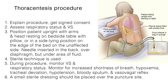The thoracentesis needle is usually inserted in the back, over the diaphragm, but under the area of fluid. Step 4: Sterile technique is used, including gloves, antiseptic prep, and drapes. Step 5: During the procedure, monitor vital signs and the respiratory status. Monitor for increased shortness of breath, hypoxemia, tracheal deviation — which are signs of pneumothorax — hypotension, bloody sputum, and vasovagal reflex. Up to 1 liter of fluid may be removed.